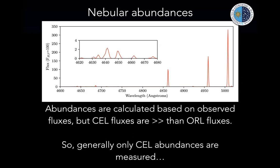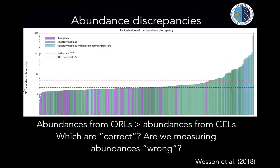Particularly when measuring abundances in external galaxies. But if we compare abundances in both planetary nebulae and HII regions derived for the same chemical species using lines with different excitation mechanisms, we always get different abundances. The abundances from the faint recombination lines are almost always higher than those from collisionally excited lines. There is a median discrepancy — a ratio of about two — but a tail extending to values of nearly 10³. In that tail of very high abundance discrepancies, we find predominantly planetary nebulae with very close binary central stars.